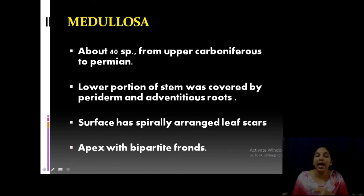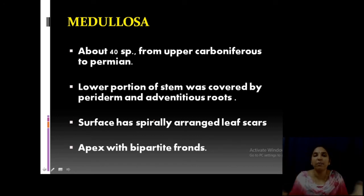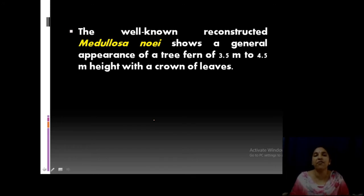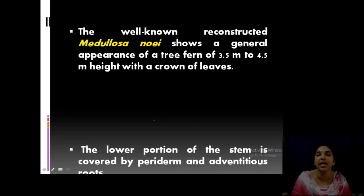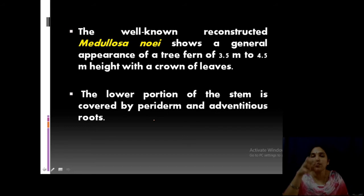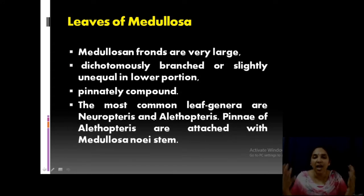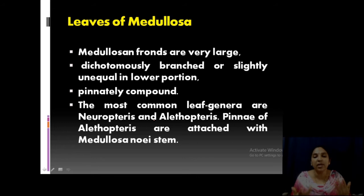A very important point: the apex of the stem is bifurcated, like a coconut palm, forming pinnately compound or bipartite fronds/leaves. Now moving on to the well-known reconstructed plant, Medullosa noei. This species appears like a tree fern, about 4.5 meters in height with a crown of leaves. The lower portion of the stem is covered by peridermal adventitious roots, and the leaves are large pinnately compound fronds, dichotomously branched — examples are Neuropteris and Alethopteris.